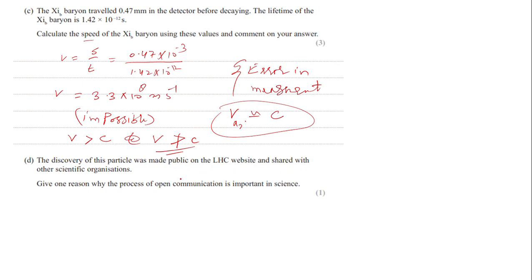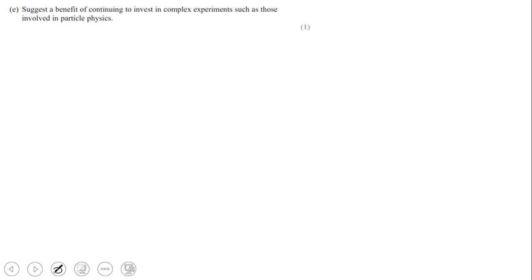The discovery was made public on the LHC website and shared with other scientific organizations. Give one reason why open communication is important in science. Sharing results allows others to validate and peer-review your findings, providing comments and confirmation of the discovery. Continuing to invest in complex experiments like particle physics provides new data and evidence to support existing theories or to develop new theories.